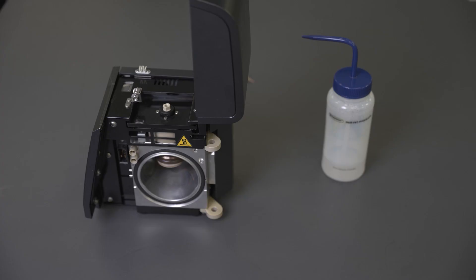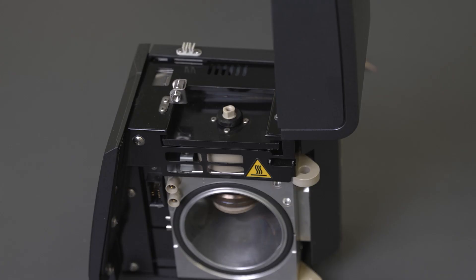If the ESI capillary needs to be replaced, retract and remove the ESI spray needle by loosening the locking collar and rotating the peak nut counterclockwise using the wrench.